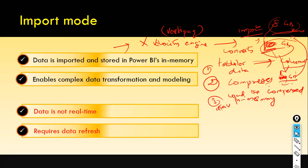Once data is compressed and loaded into memory, since the compressed data size is much smaller compared to the original, it doesn't require too much RAM — hence the performance is pretty fast. So whenever you use import mode, behind the scenes the X-Velocity engine carries out three steps: converts tabular data to columnar data, compresses the data, and then loads the compressed data into memory.